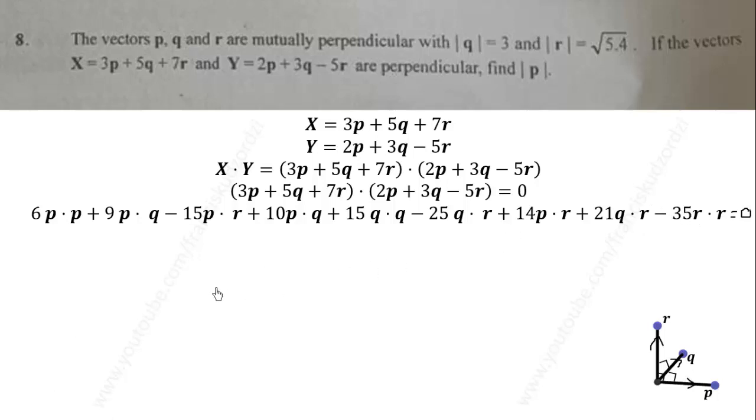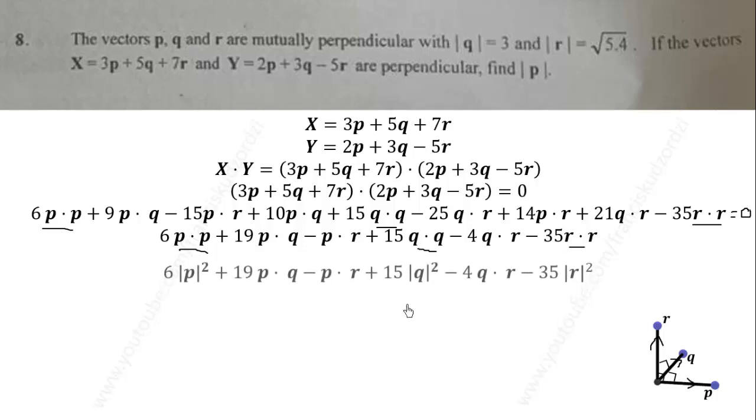We simplify. P dot P will equal the magnitude of P squared. Q dot Q will equal the magnitude of Q squared. R dot R will equal the magnitude of R squared. After combining the like terms, we get this expression. We can simplify further, indicating the magnitude squared for P dot P, Q dot Q, and R dot R.